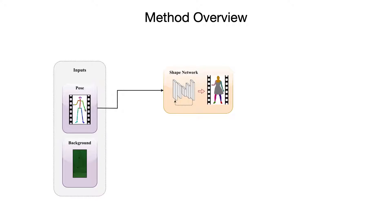In the first step, we apply a shape estimator that estimates the target actor's 2D shape in the form of dense body part segmentation from the provided pose. This representation provides direct information on the position of different body parts and can model the deformations of loosely swinging garment independently of the final appearance.